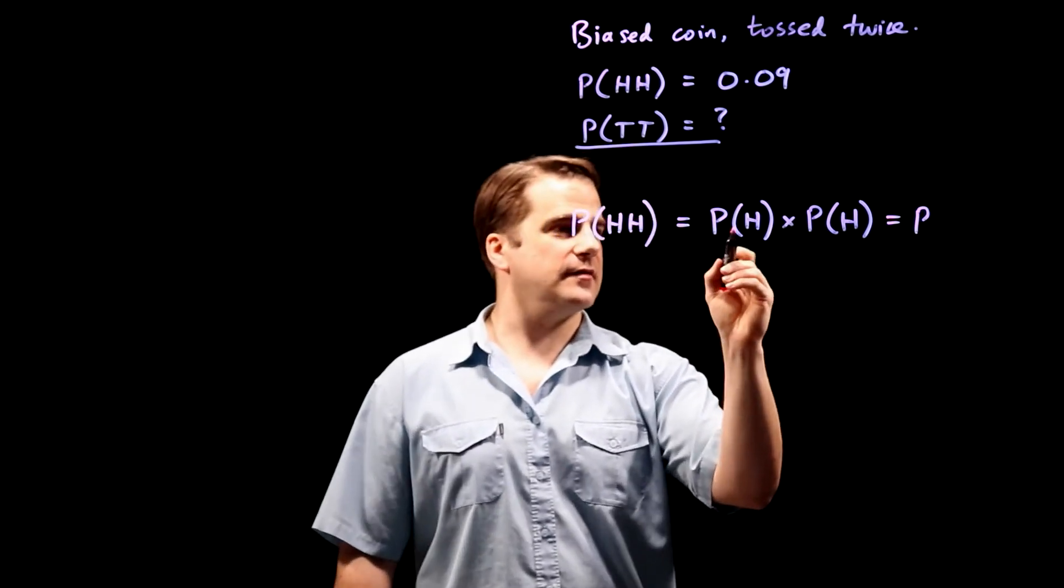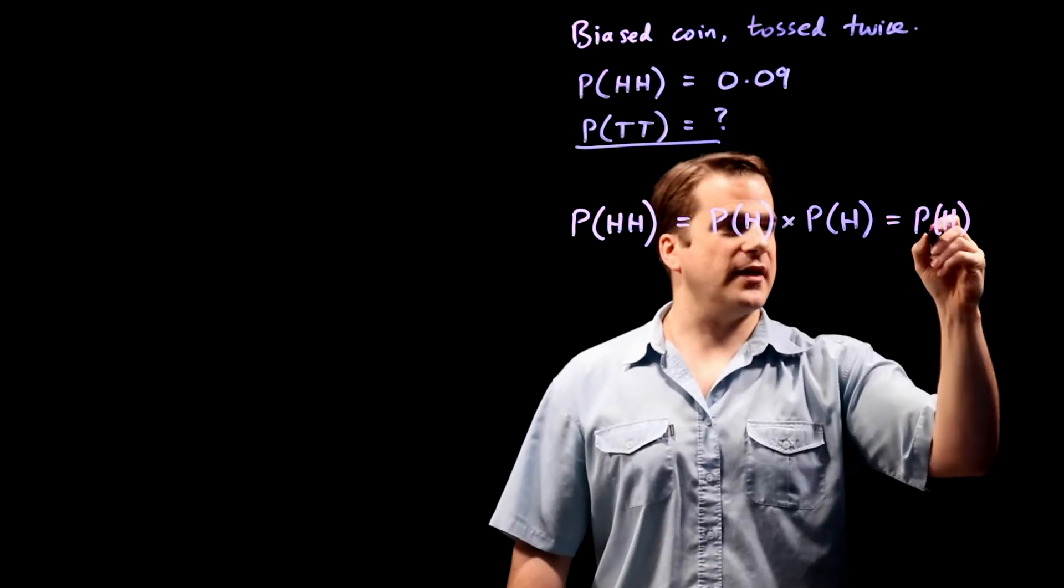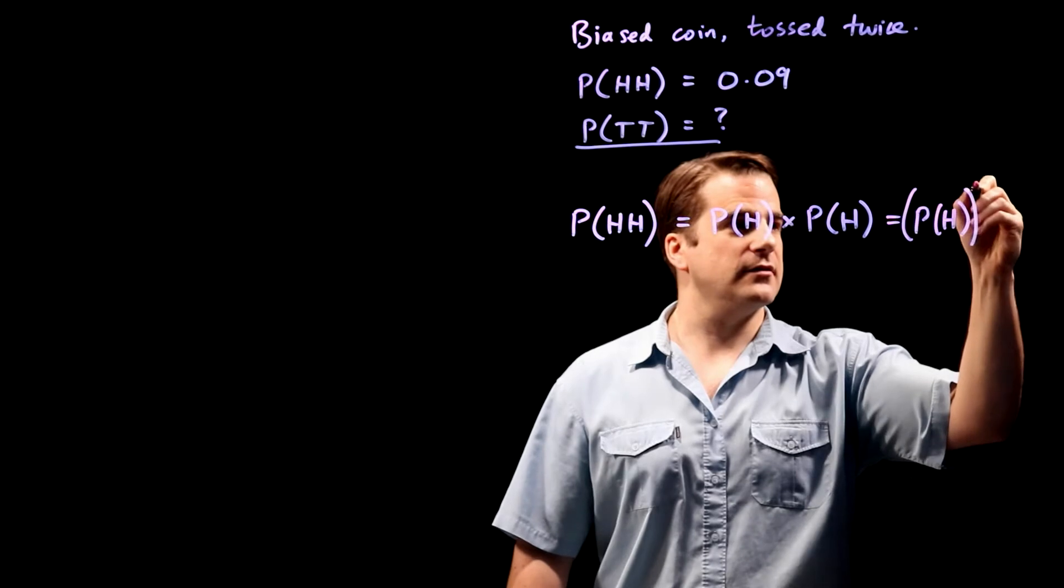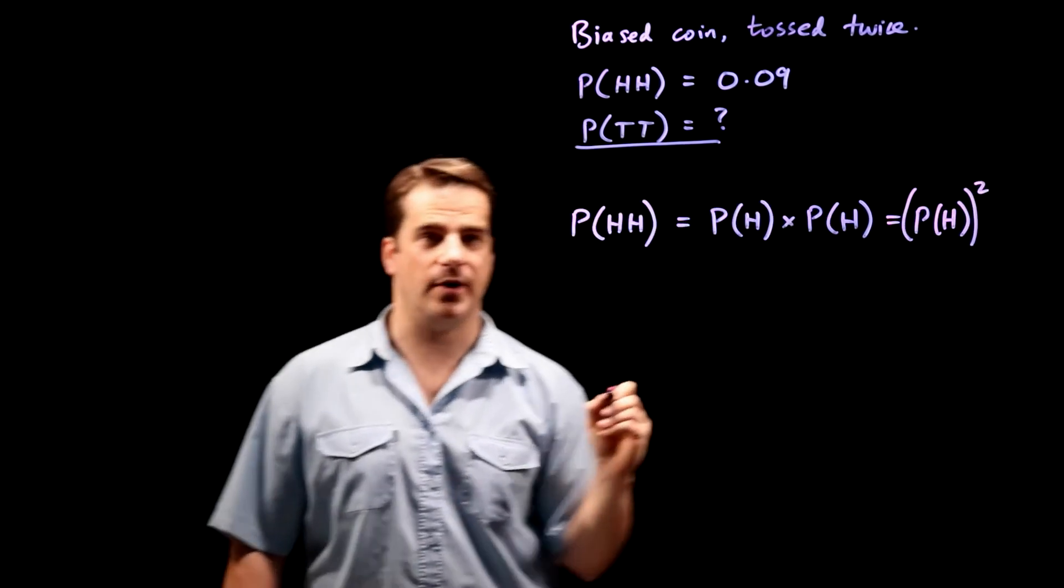So that's just, they're the same. So P(H), probability of getting a head, the whole thing, squared. P(H) times P(H) is P(H) squared.